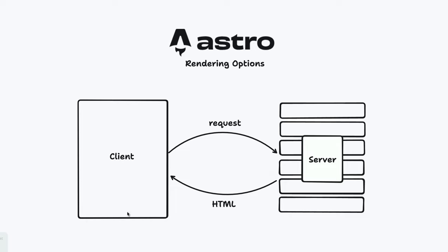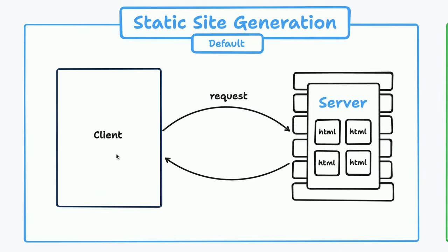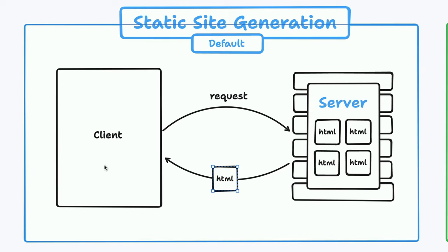Generally speaking, if you don't change anything in Astro's default options, when a client comes and visits your site, it will request from the server, and that server will send back HTML. The default behavior is for this to be static. Basically, what happens is when you go and build your site, it builds everything ahead of time, creating HTML files that are just sitting on the server. So when somebody comes to your site, the server says you want this page, and it gives you that page. It's very, very quick, and it's all statically built ahead of time.